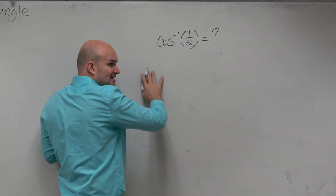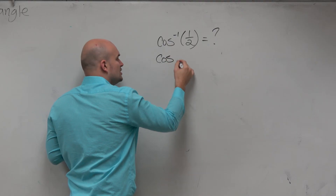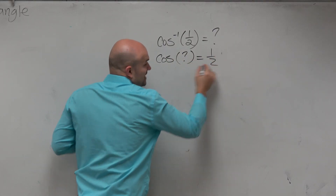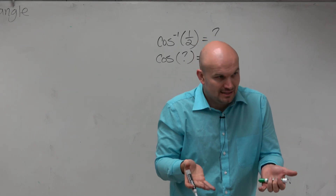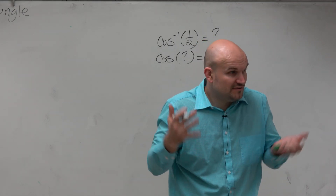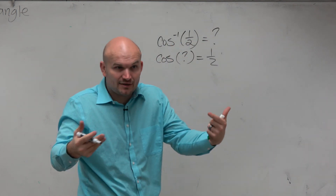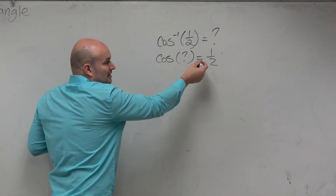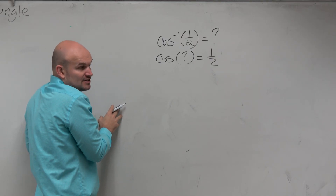If I was just to rewrite this with the regular cosine function, remember guys, this is the cosine of what equals 1/2. We know we only take the cosine of — or sine of, tangent of — angles, right? So we're looking for an angle. So the cosine of what angle is equal to 1/2? That's basically what we're asking ourselves.